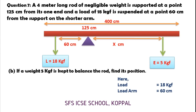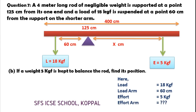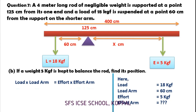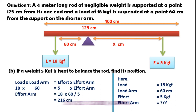Here, effort is equal to 5 kgf as given in Part B. We need to find the effort arm. According to the principle of levers, load into load arm equals effort into effort arm — substituting, 18 into 60 equals 5 into effort arm. Therefore, effort arm equals 18 into 60 divided by 5, which is 216 cm or 2.16 m.